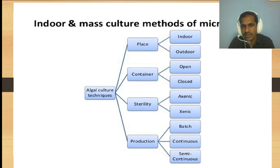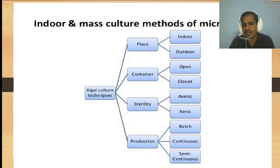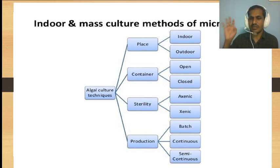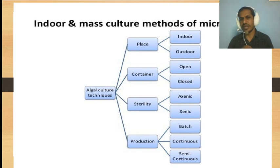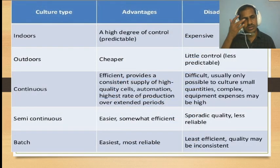There are two methods to culture algae. Algal culture techniques can be divided into two categories based on place: indoor culture and outdoor culture. Based on the container, it can be open or closed. Based on sterility, they are axenic, xenic, and batch culture. Based on production, it is divided into three categories: batch production, continuous production, and semi-continuous production.